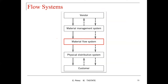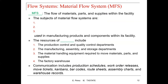The material flow system looks at the flow of materials, parts, and supplies within the facility. The subjects are the materials, parts, and supplies used in manufacturing products and components within the facility. The resources include the production control and quality control departments, manufacturing, assembly and storage departments, the material handling equipment required to move materials, and the factory warehouse. Communication includes production schedules, work order releases, book tickets, campaigns, barcodes, route sheets, assembly charts, and warehouse records.